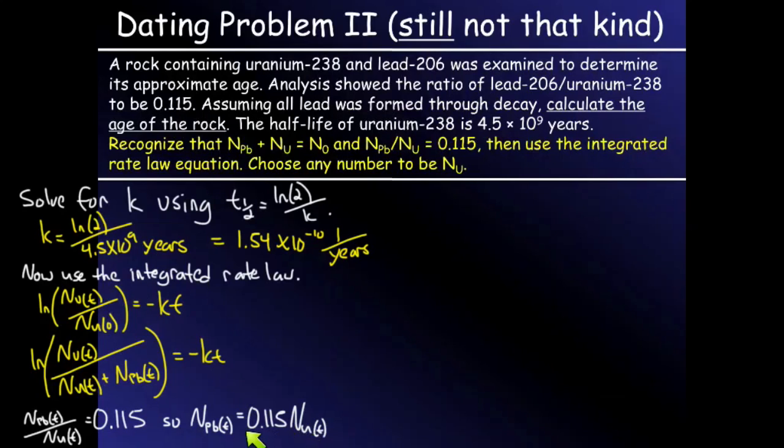I can then take this expression for lead at time t and plug it in here. What does that do for me? Well, I will then have this whole ratio expressed in units of number of uranium nuclides at time t. Let me do that and I'll show you.